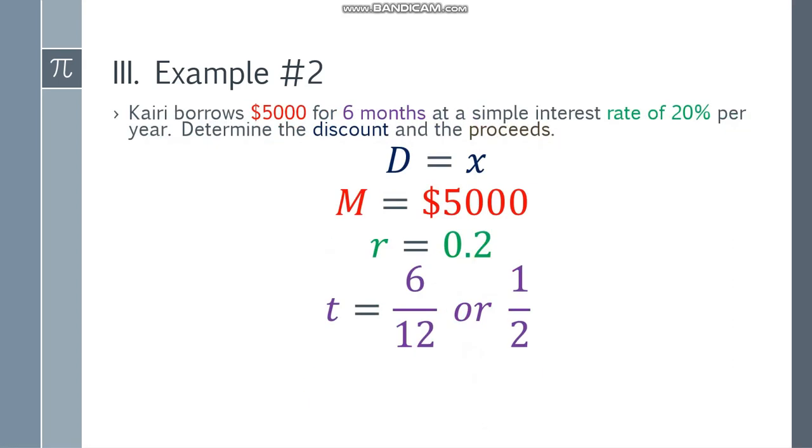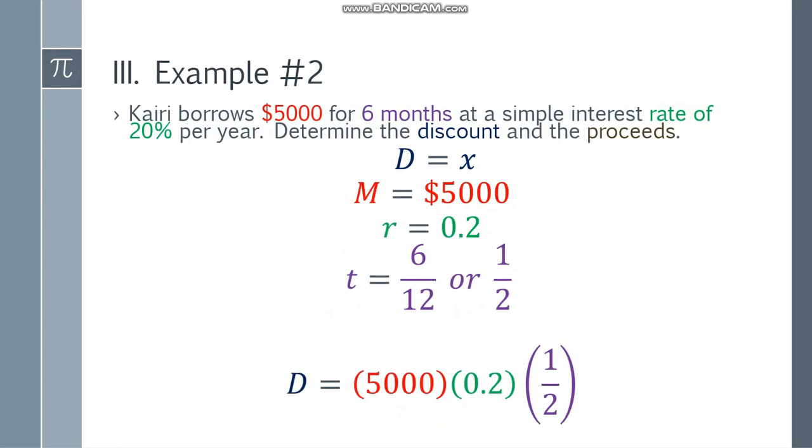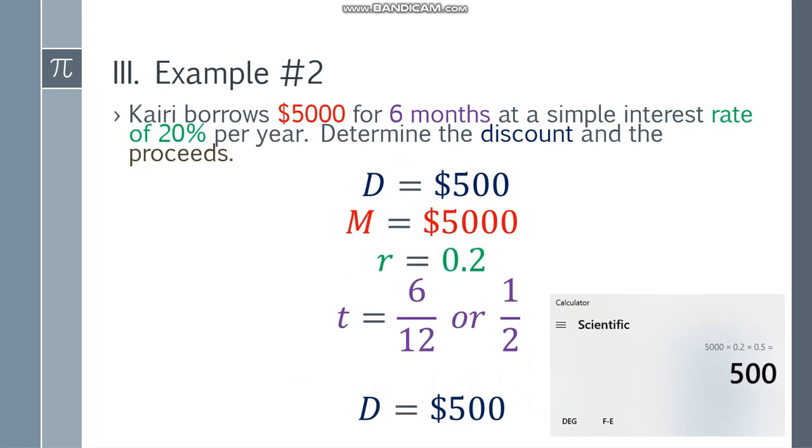Using the formula D equals MRT, substitute the values: 5,000 times 0.2 times one half. Using the calculator, you will get an answer of $500. That is the discount.